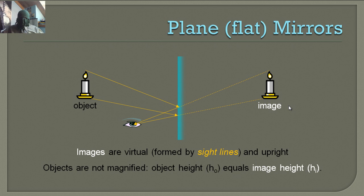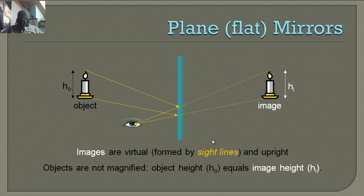Objects are not magnified. The object height HO equals the image height HI — so HO equals HI, there's no magnification.